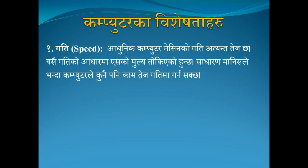One characteristic is speed (gati). The computer machine has speed in processing data. Processor types include i3, i5, and i7. This speed is what differentiates the computer's performance.